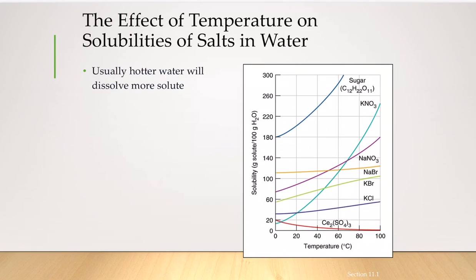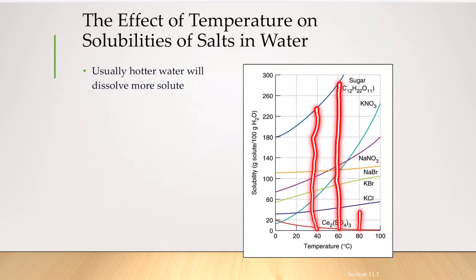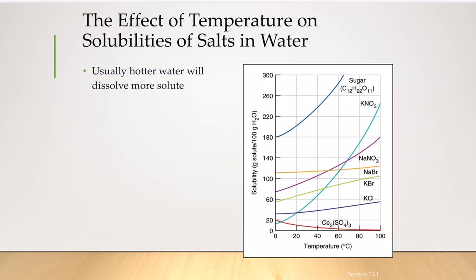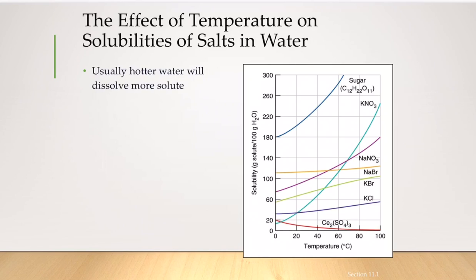This graph shows how temperature affects solubility of different compounds in water. For sugar, at 40°C about 220 grams dissolves, but at 60°C up to 280 grams dissolves — solubility increases with temperature. However, this is not true in all cases; for cerium(III) sulfate, solubility actually decreases as temperature increases.